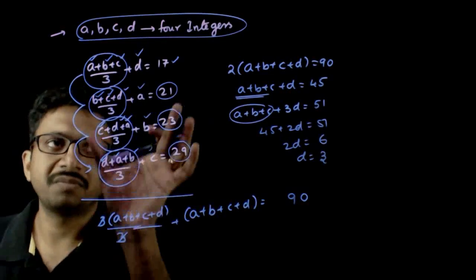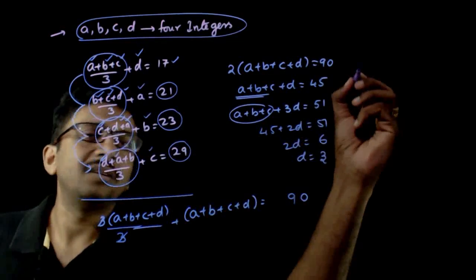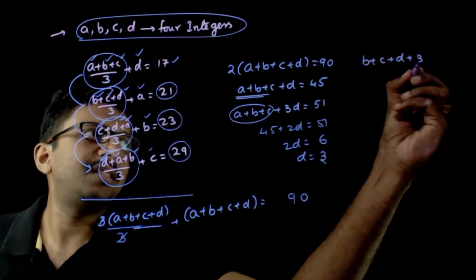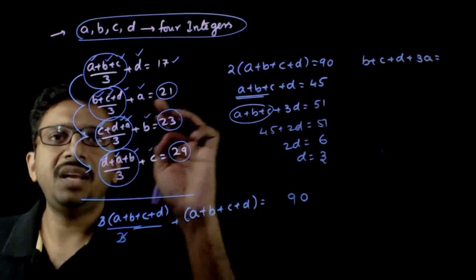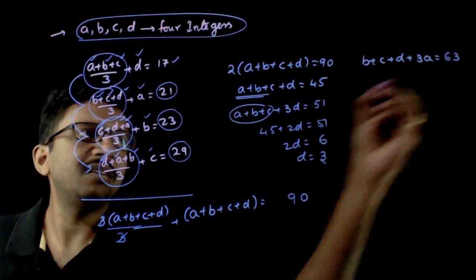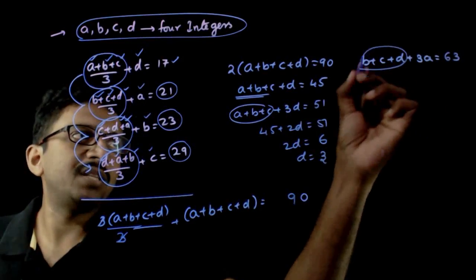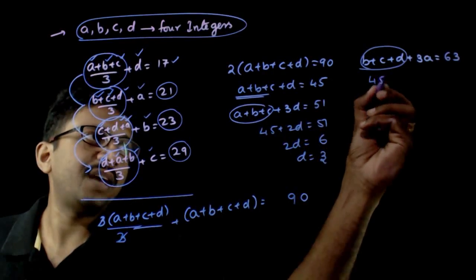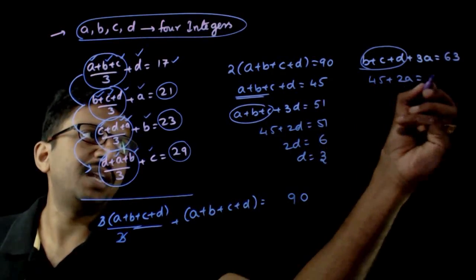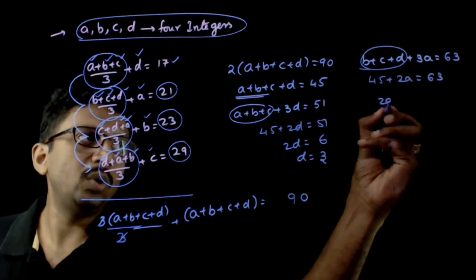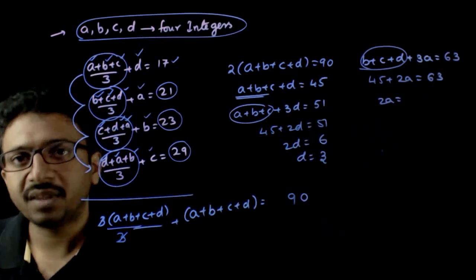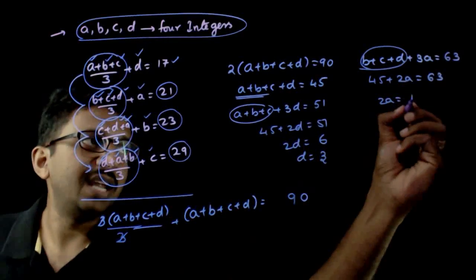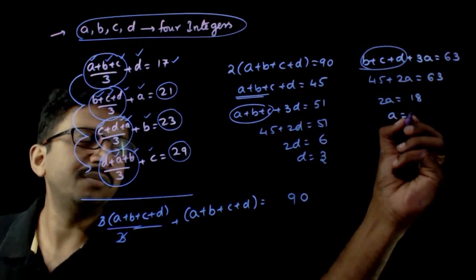Similarly, using the next expression: b + c + d + 3a = 3 × 21 = 63. Since b + c + d = 45 − a, substituting gives 45 + 2a = 63, so 2a = 63 − 45 = 18, and therefore a = 9.